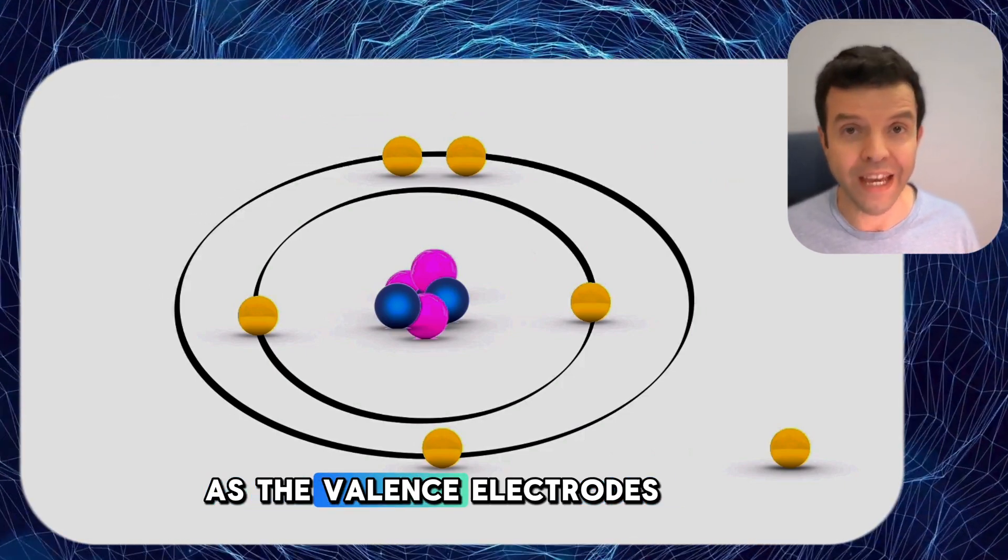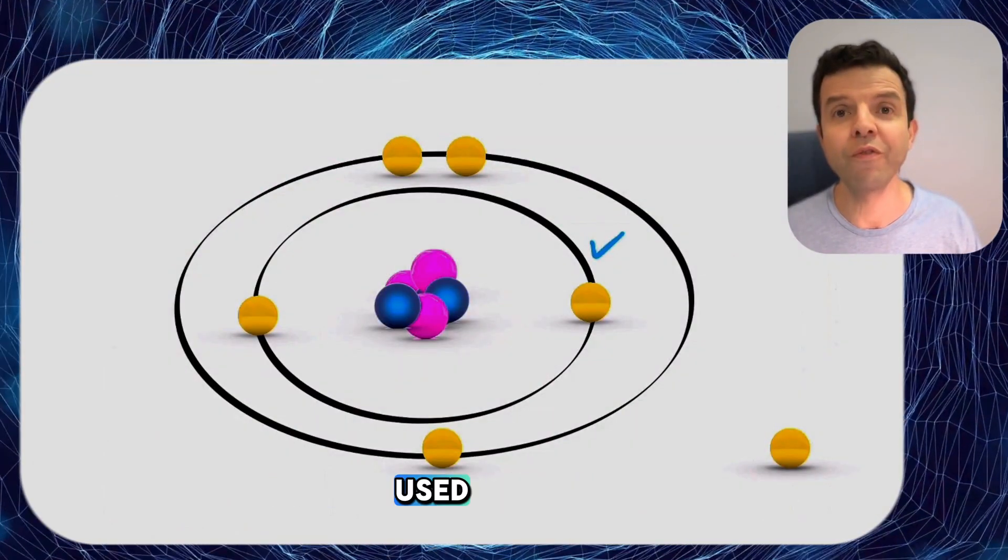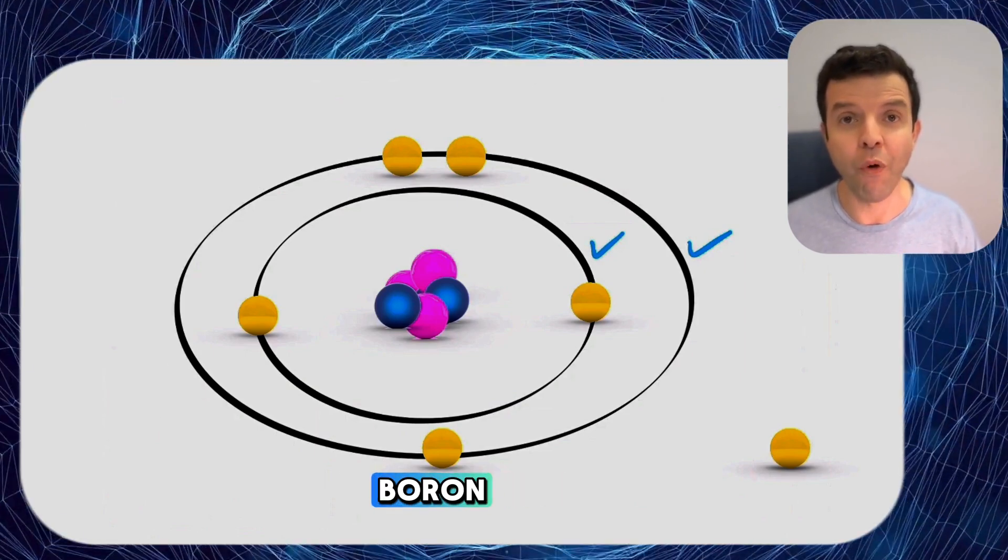Those electrons are known as the valence electrons. Note that we have used two shells to build up the atom of boron.